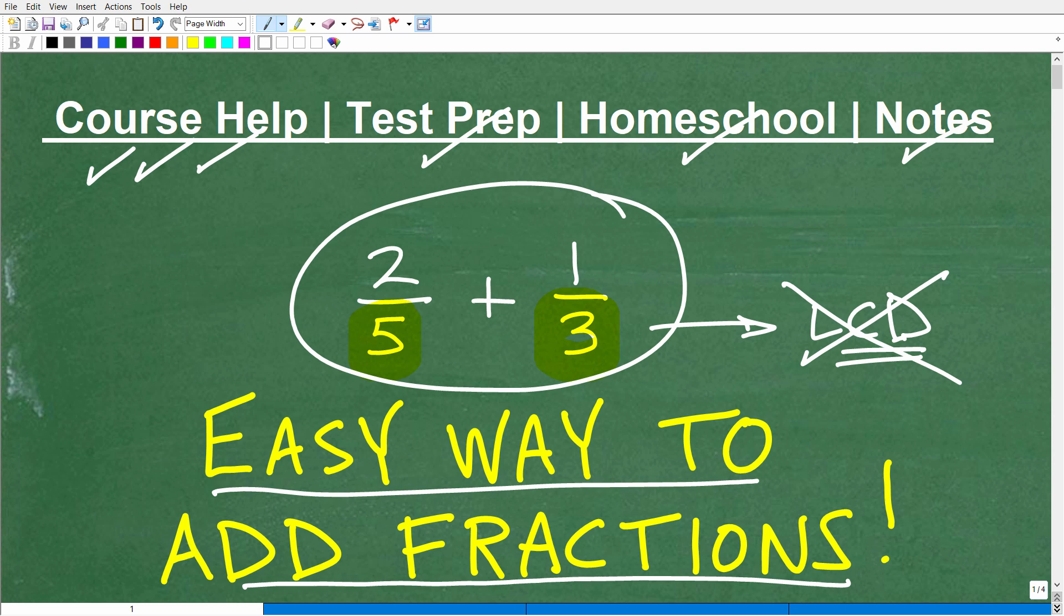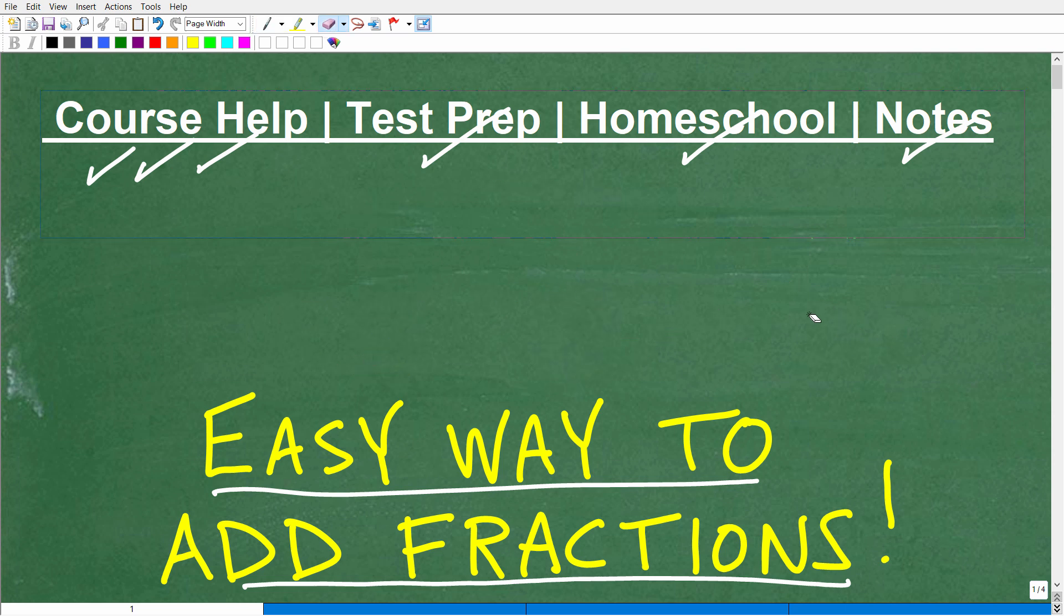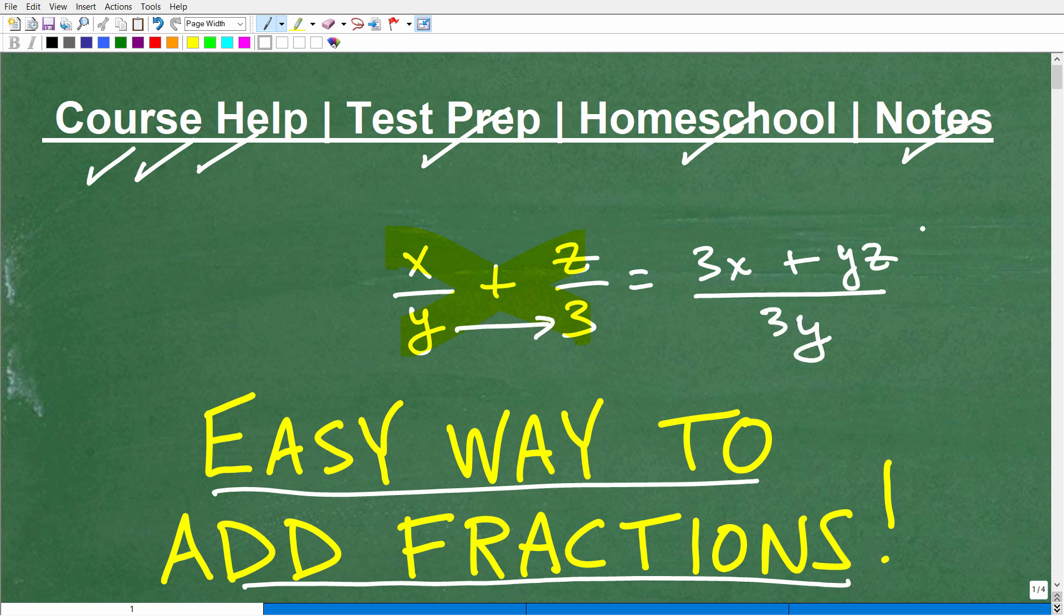And you can also use this with algebraic problems as well. So, for example, let me show you real quick. Let's just do something. If I had x over y plus z over 3, you're like, oh, boy, how do I deal with that? Well, we could just use that bow tie technique right there. So, that's 3 times x. 3x plus y times z. yz over y times 3. And that would be 3y. There is your answer. So, again, this works with algebra stuff as well.